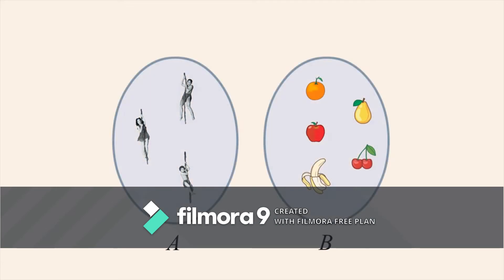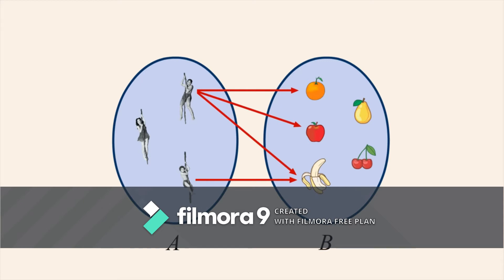In a binary relation, not every element in the two sets may be involved in the relation. In our example, Tarzan, Boy, Oranges, Apples, and Bananas are part of relation L, while Jane, Pears, and Cherries are not.